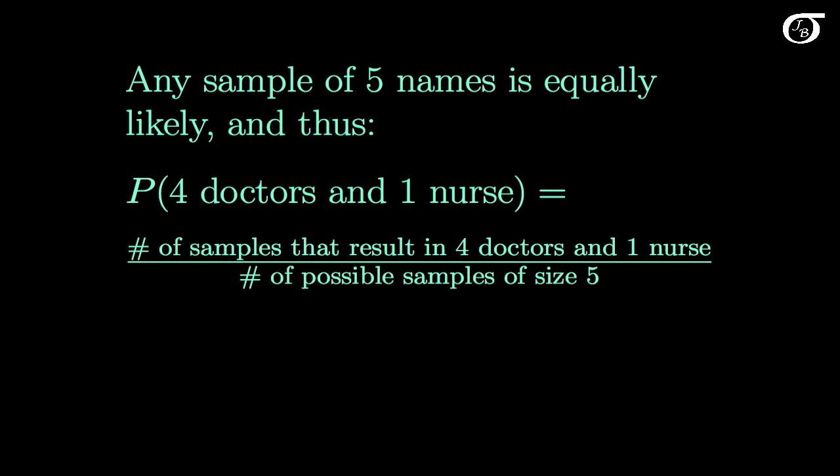If we're randomly selecting 5 names, then these 5 names are all equally likely, and the probability that we pick 4 doctors and 1 nurse is simply the number of samples that result in 4 doctors and 1 nurse over the total number of possible samples of size 5. So recall there were 6 doctors and 19 nurses for 25 people altogether. Our total number of possible samples then of size 5 is 25 choose 5, the number of ways of picking 5 items from 25 total.